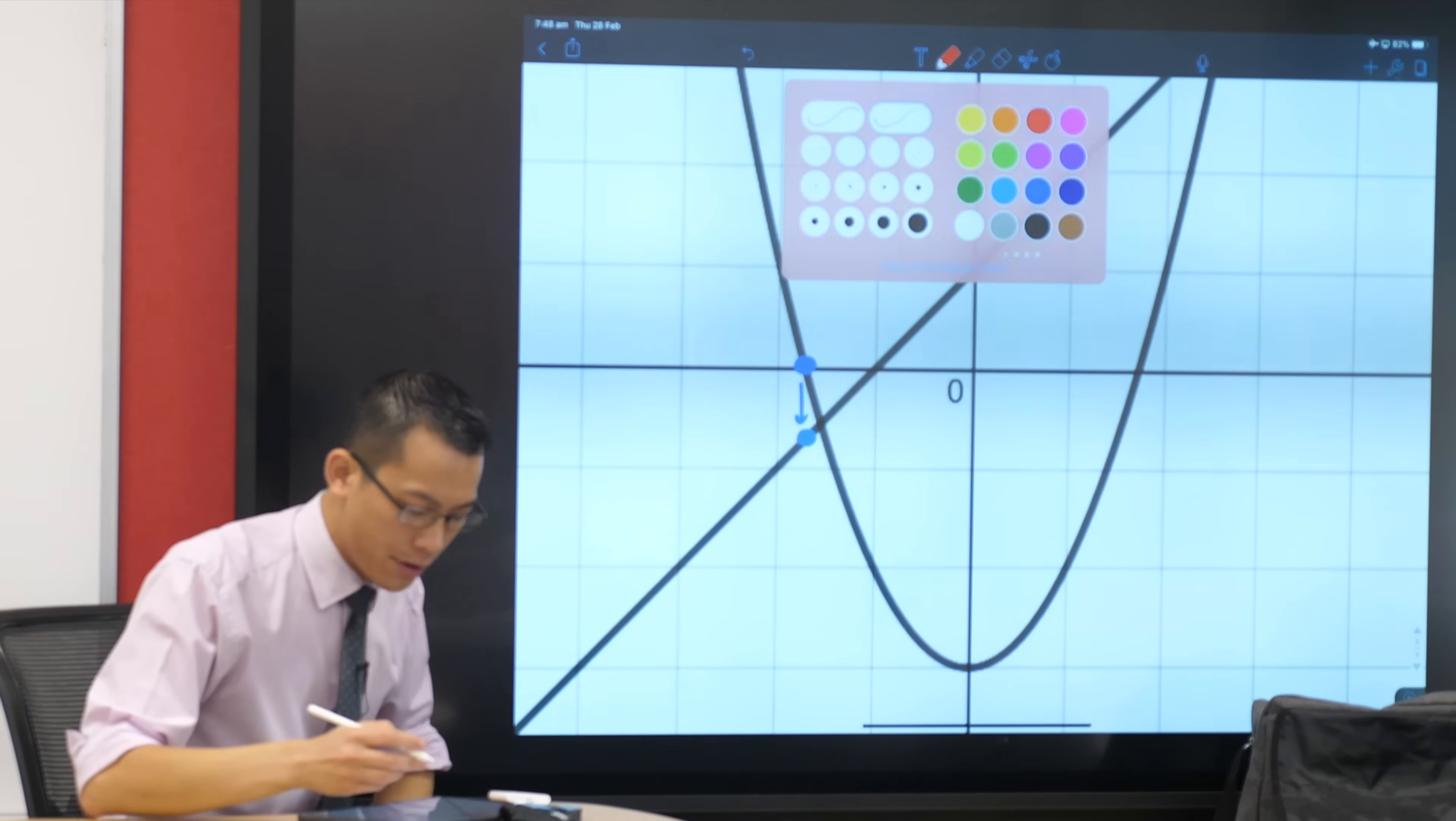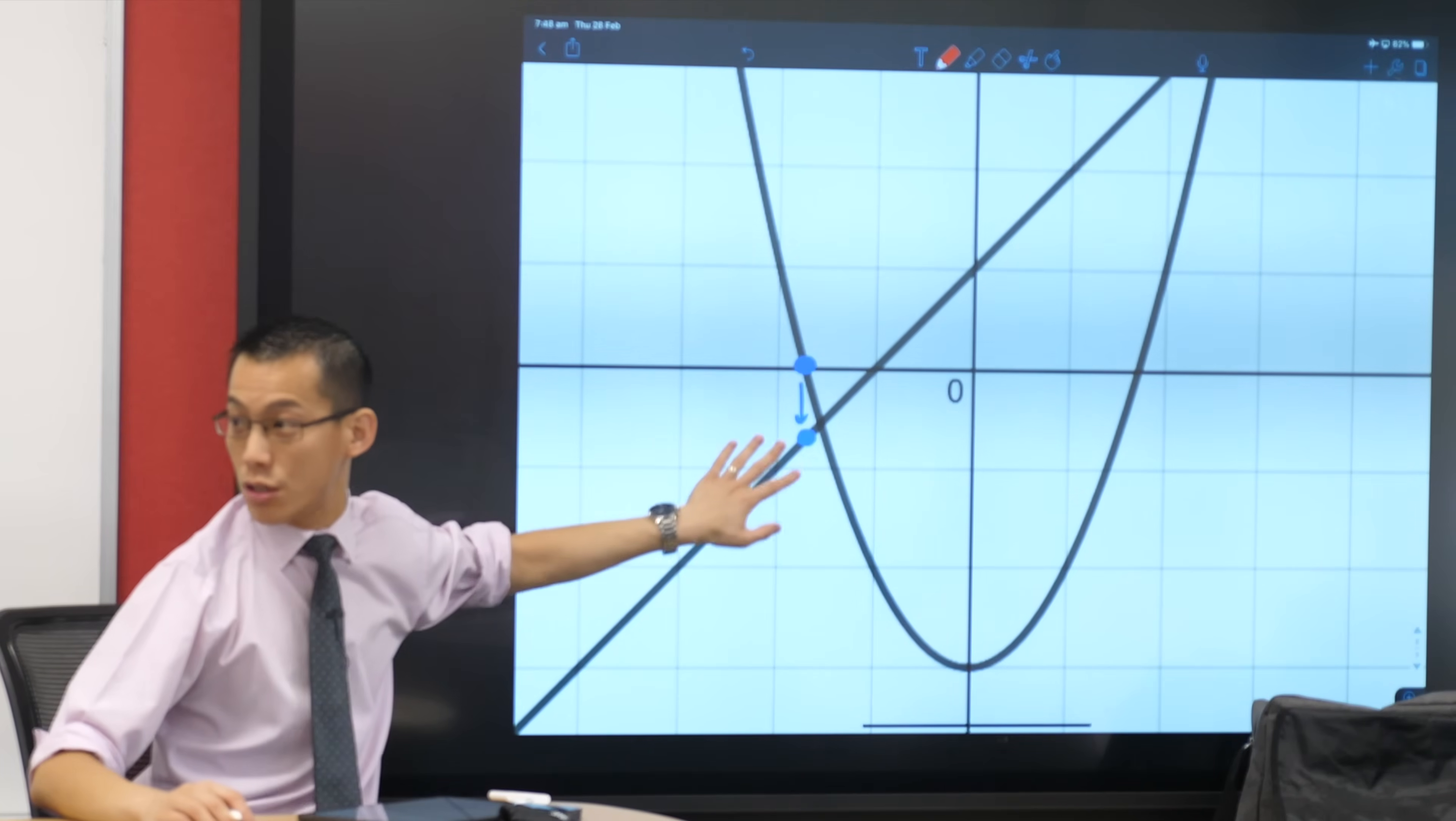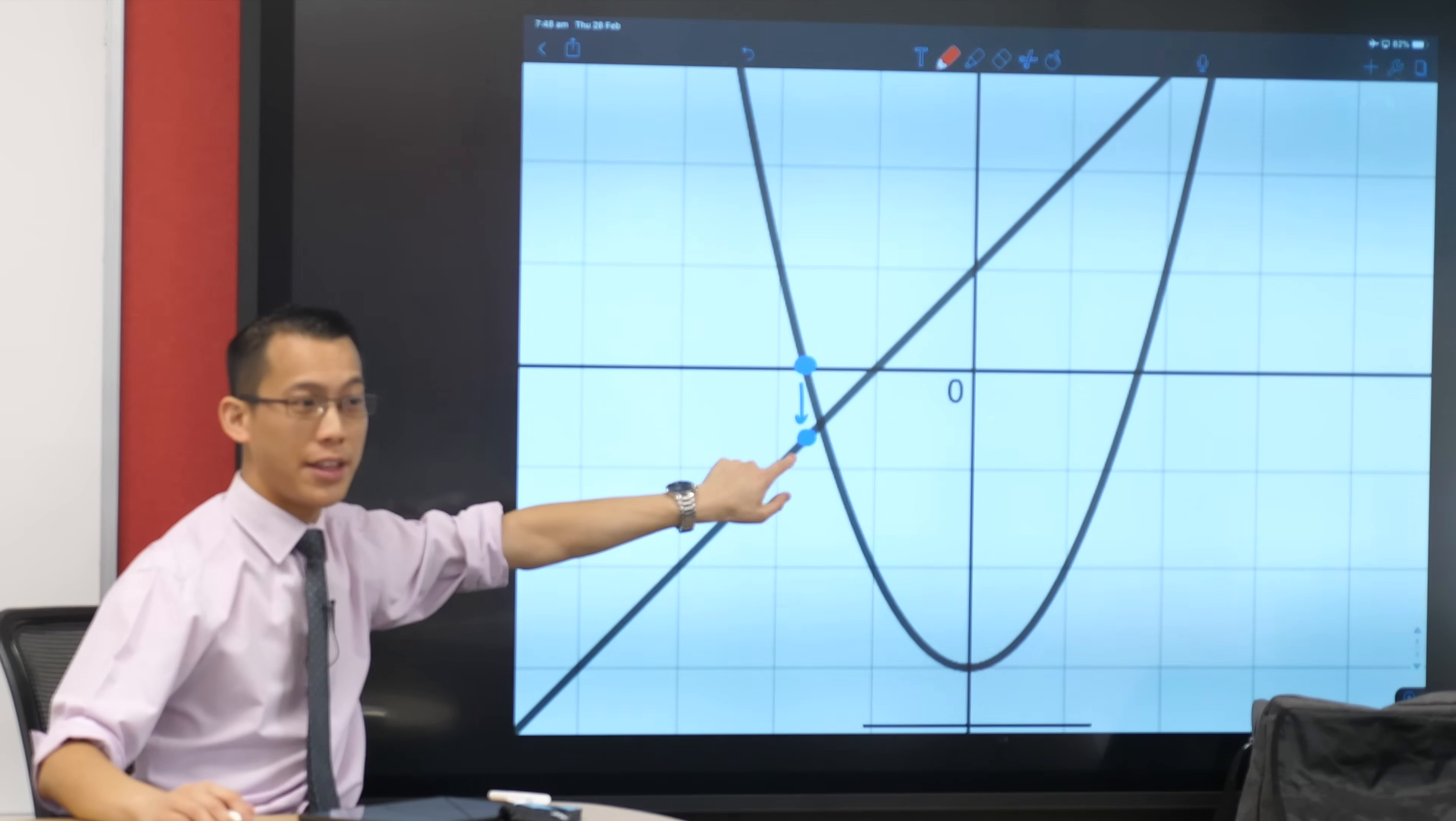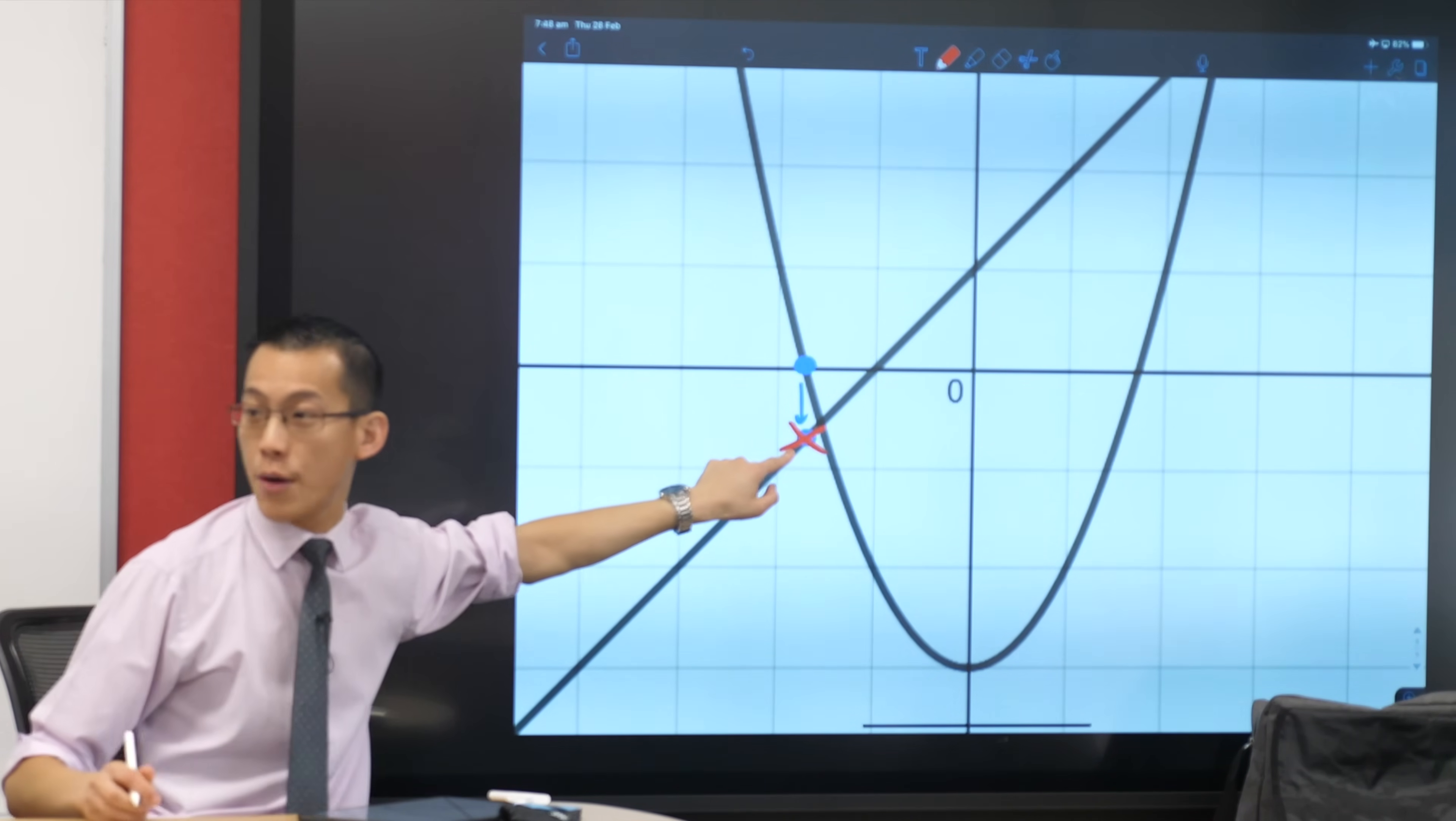So whatever that value, it's negative, sorry, negative three quarters. Whatever that value happens to be, when I add these two graphs together, zero plus something else will give me something else. So I'm going to go through there. Are you okay with that?